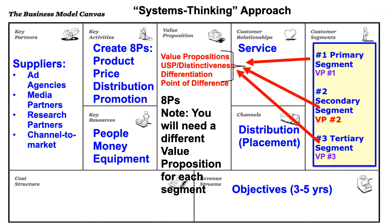What the Business Model Canvas does for us is show you all the different areas of your business: your cost structure, your objectives, your distribution plan, your service plan, what are the major key activities you're going to be doing, what are your key resources, etc. One of my favorites is the big block on the left — your key partners, the partners that are going to assist you. I like that because it's your eighth P of marketing: who are your partners?